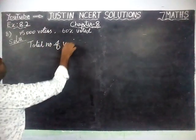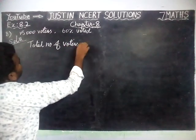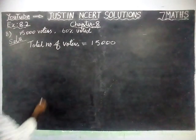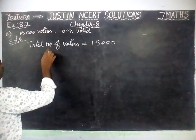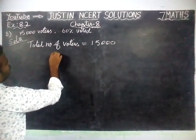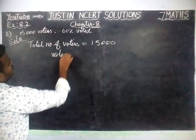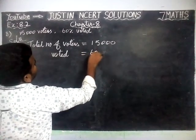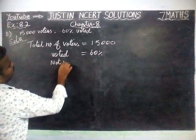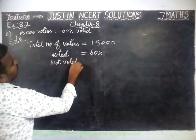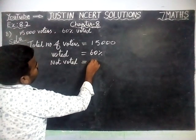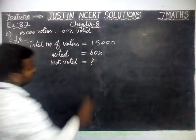Total number of voters is equal to 15,000, and that is 100%. Voted is equal to 60%. Not voted, or did not vote, is equal to — we have to find.